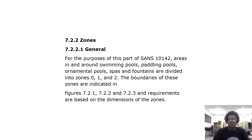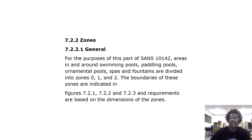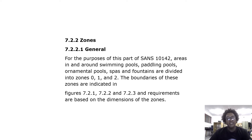For the purposes of this part of SANS 10142, areas in and around swimming pools, paddling pools, ornamental pools, spas and fountains are divided into zones 0, 1 and 2. The boundaries of these zones are indicated in figures 7.2.1, 7.2.2 and 7.2.3, and requirements are based on the dimensions of the zones. We'll have a look at the zones and the drawings shortly.